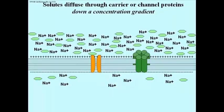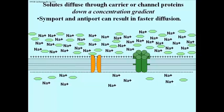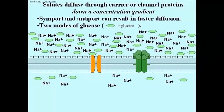So solutes again diffuse through carrier or channel proteins always down a concentration gradient. Symport and antiport that we've just seen can result in faster diffusion. There are two modes of glucose transport, through the glucose transporter which I showed you a moment ago, or sodium ion enhanced glucose transport. So let's take a look at these.